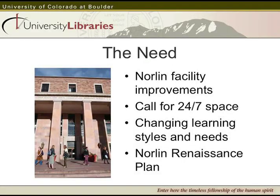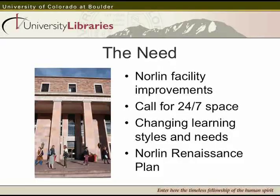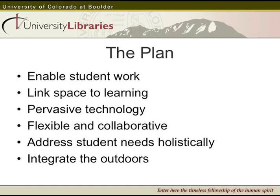We needed to accommodate students who work at all hours of the night, students with group study rooms, and students with more power outlets than we'd ever had before. All of this led to the Norlin Renaissance Plan — Norlin being the name of our main building — a five-phase plan to renovate the entire 350,000 square foot building. The commons is phase one and the only piece completed at this time. We're enabling student work and wanted to link our commons space to learning — one element being the writing center located in our commons.